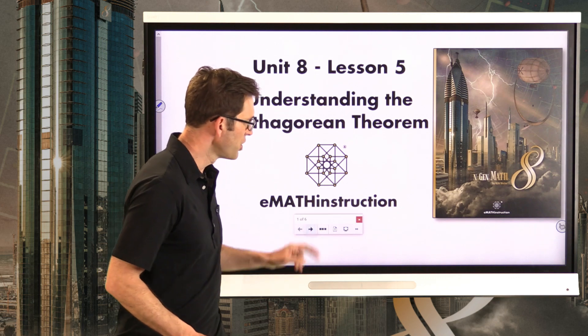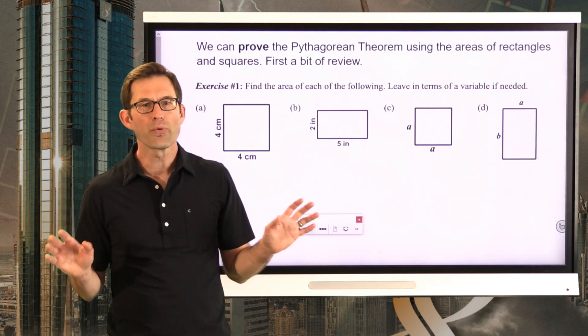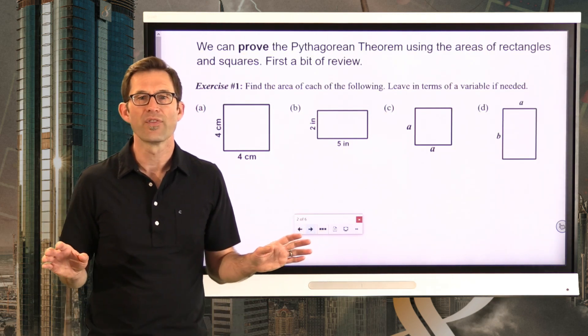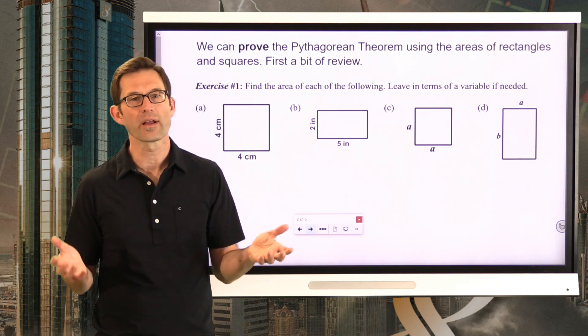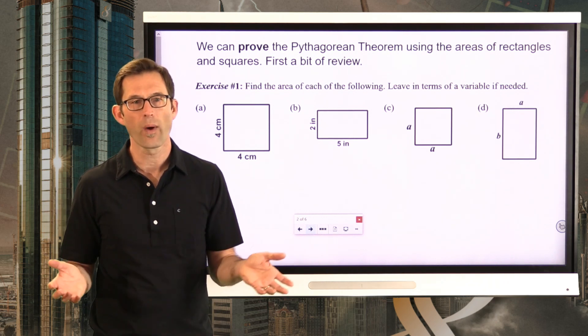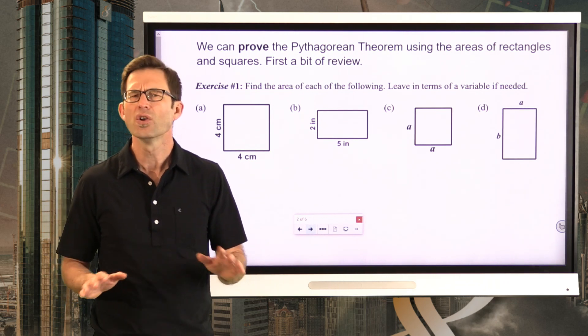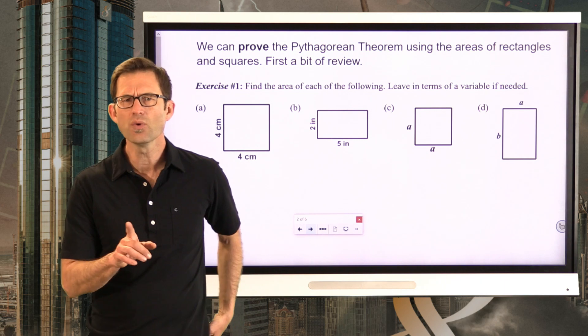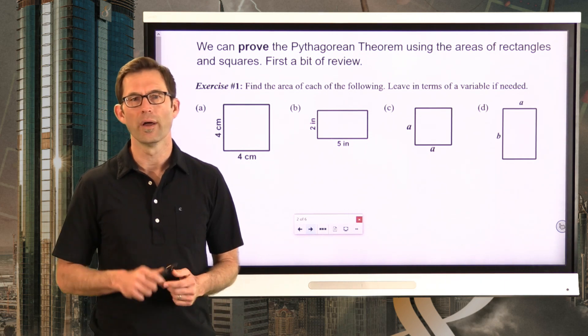Let's build some of the groundwork. We can prove the Pythagorean Theorem using the areas of rectangles and squares. So first, let's do a bit of review in exercise number one.